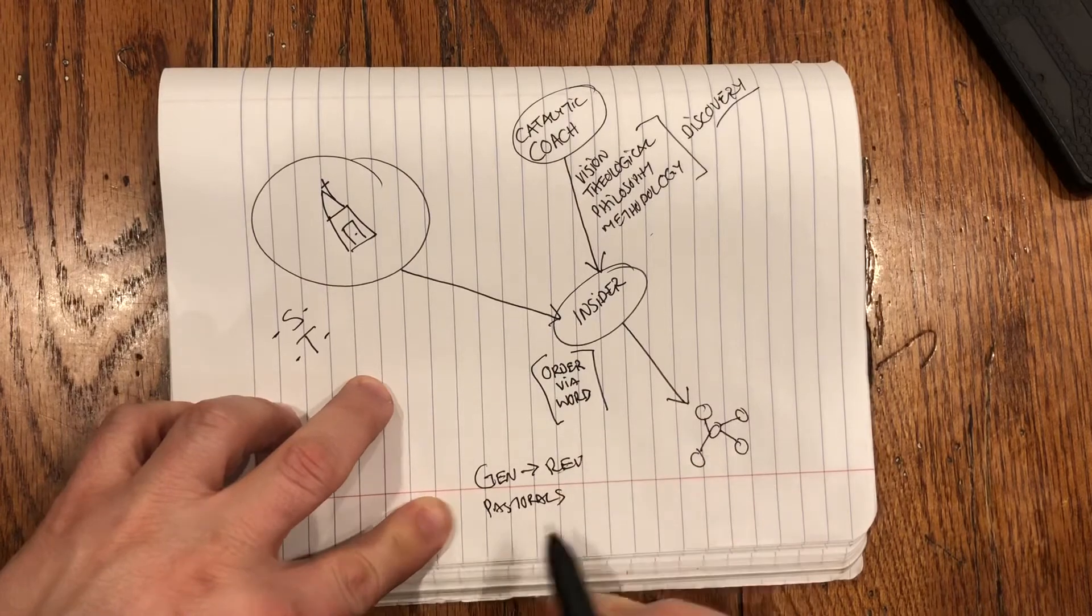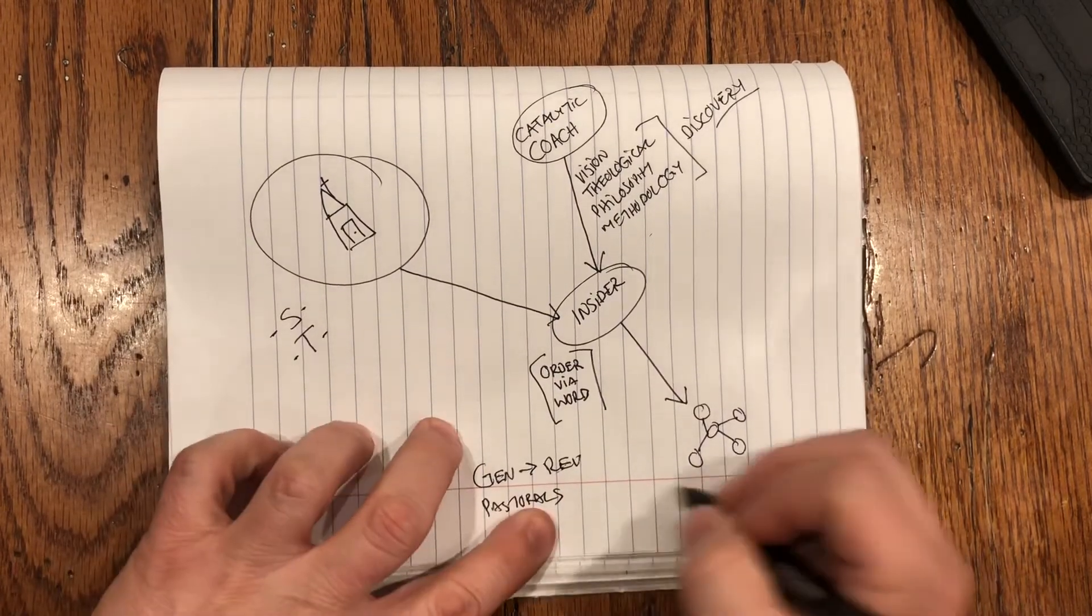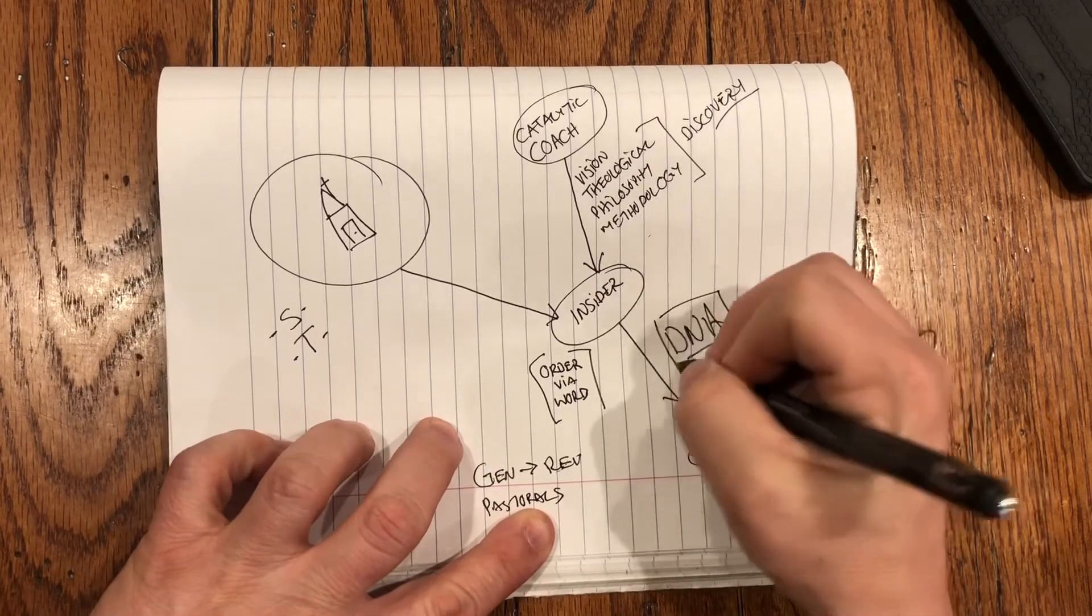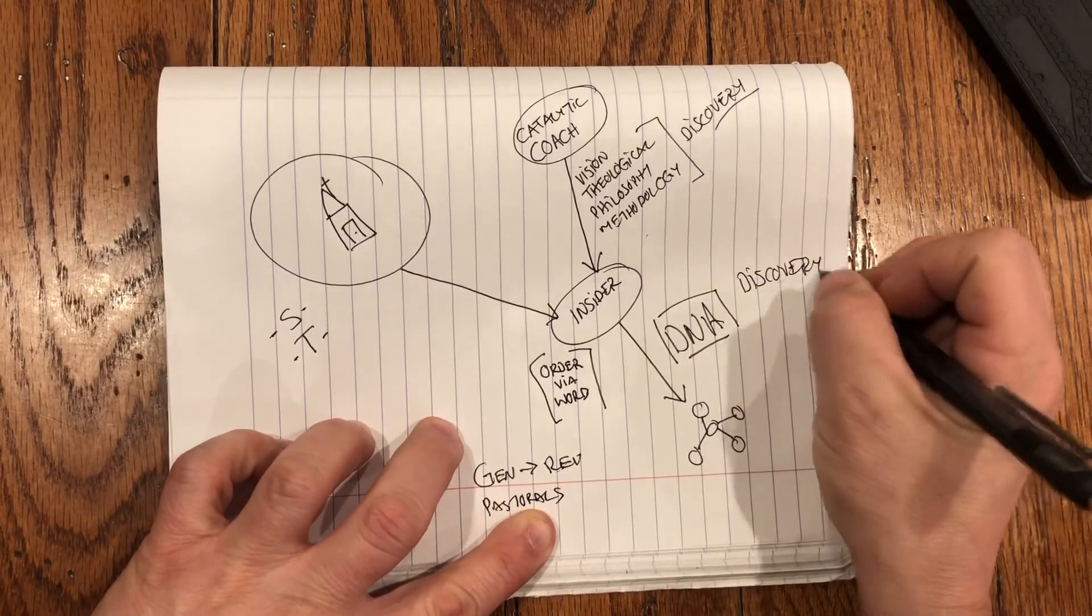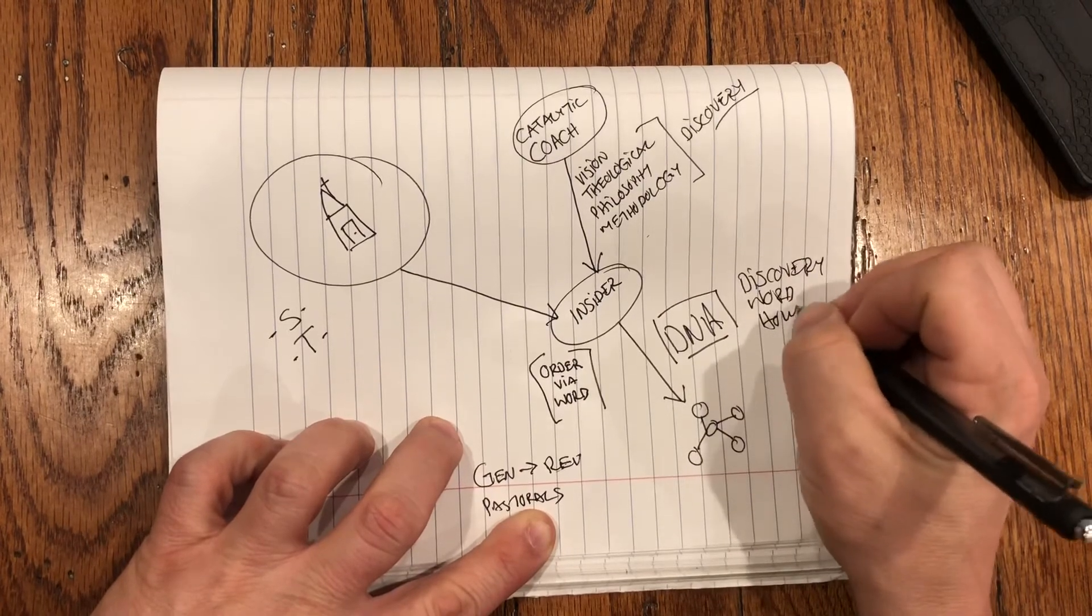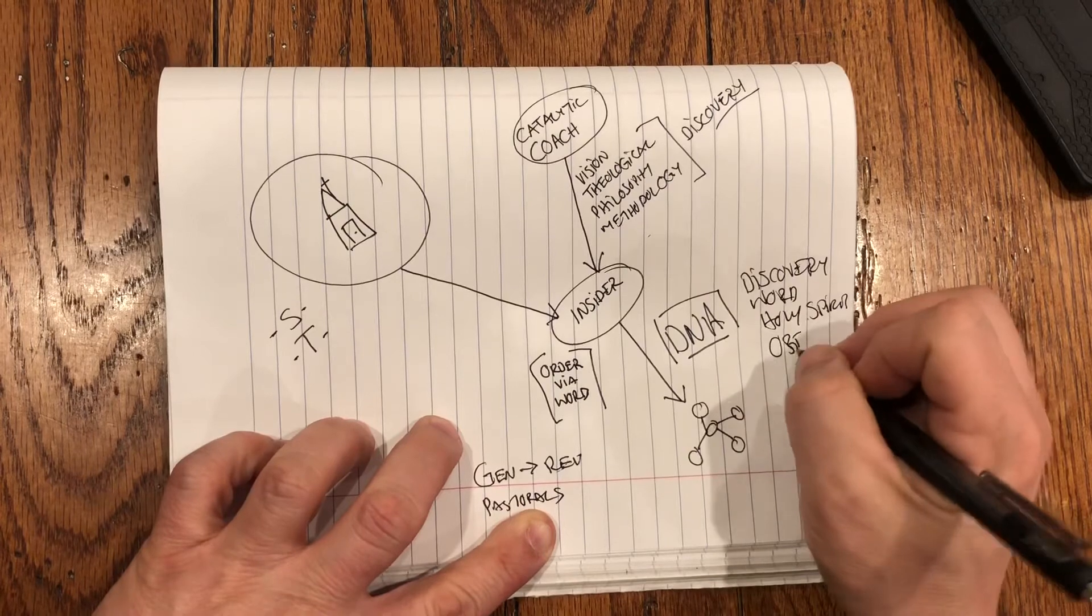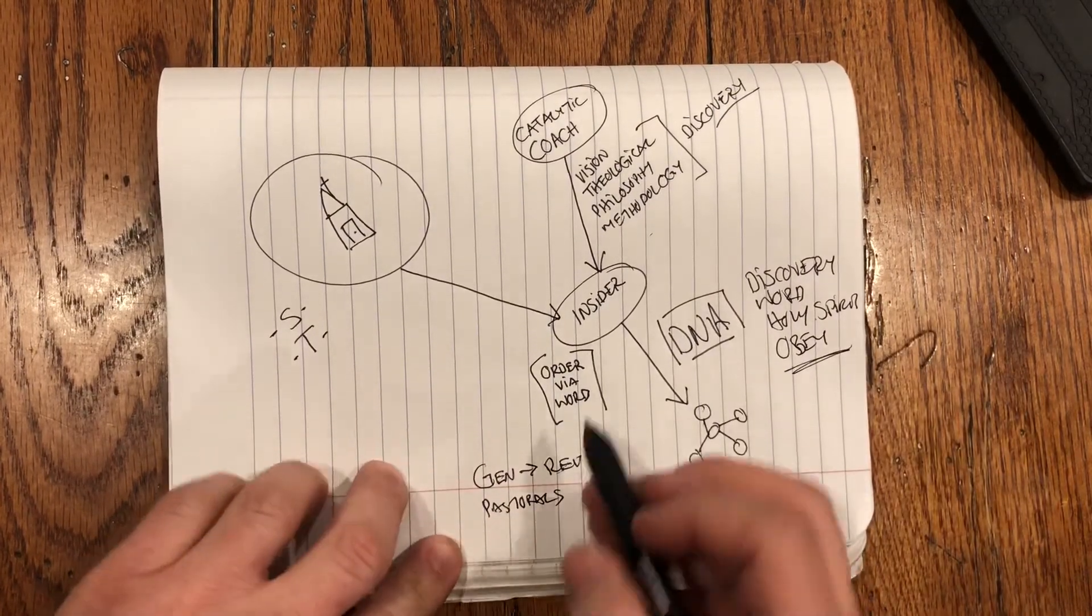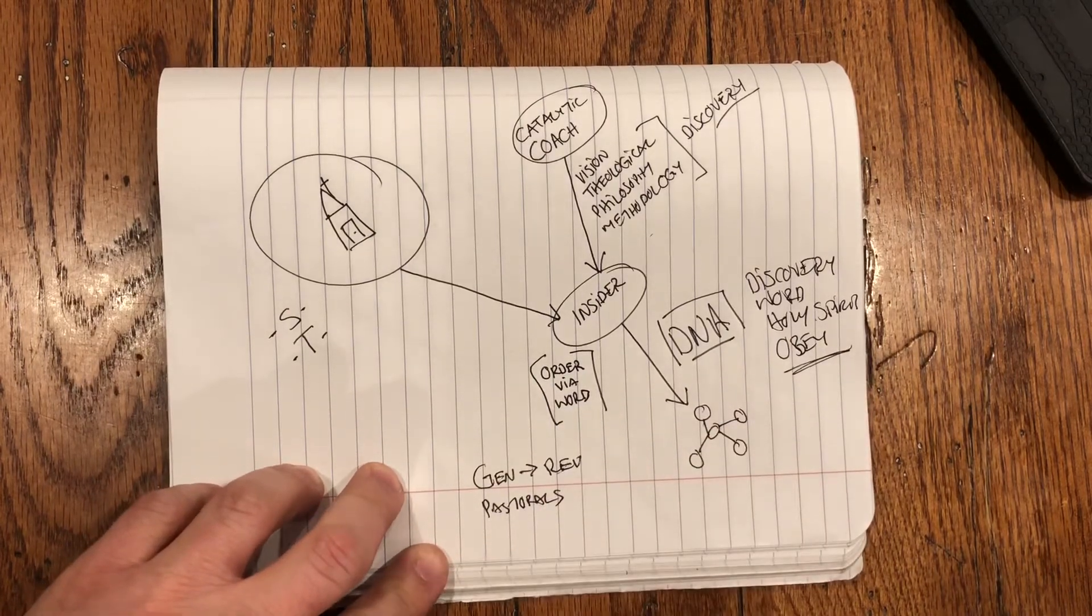So you're staying within the DNA of the movement or of the potential movement by doing discovery studies, by still emphasizing the fact that it's about the word, and it's about the Holy Spirit, and it's about obedience. And so you're maintaining the DNA of this group, but you're providing the framework so that you can bring order via the word.